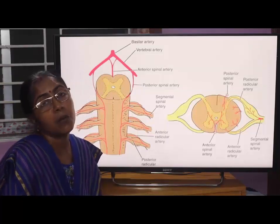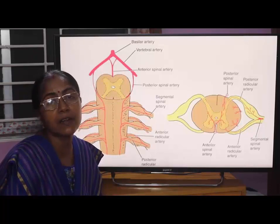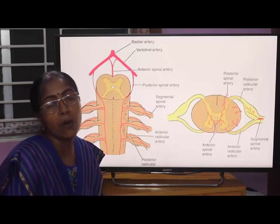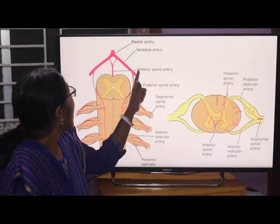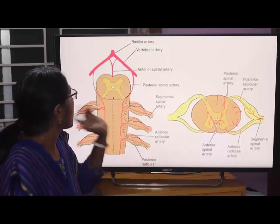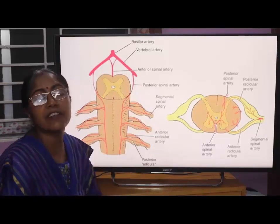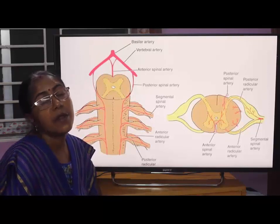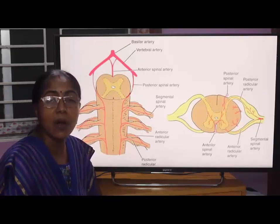Now, what are the arteries that supply the spinal cord? The spinal cord is supplied by the anterior spinal artery, posterior spinal artery, and segmental spinal arteries.